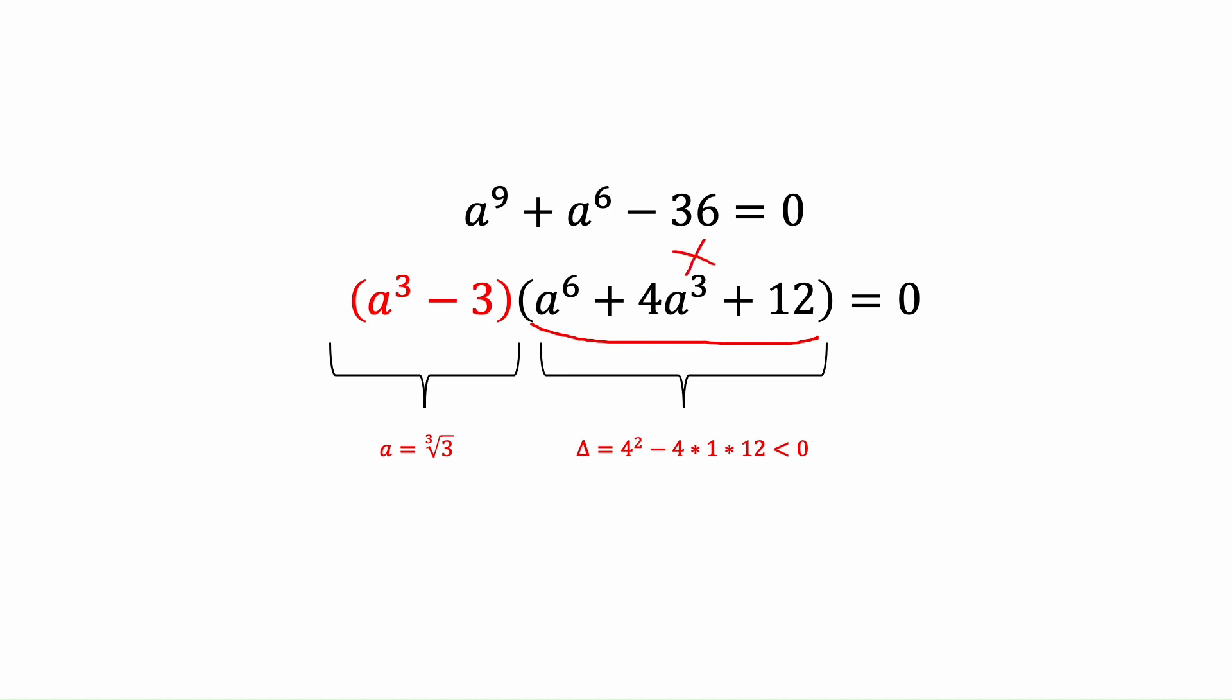So a to the power 6 is going to be x to the power 2. So this is simple quadratic equation. And we can find the root by traditional way. So we will find delta here. As we want to calculate delta, we see the delta is going to be lower than 0. So we don't have real roots for this part.